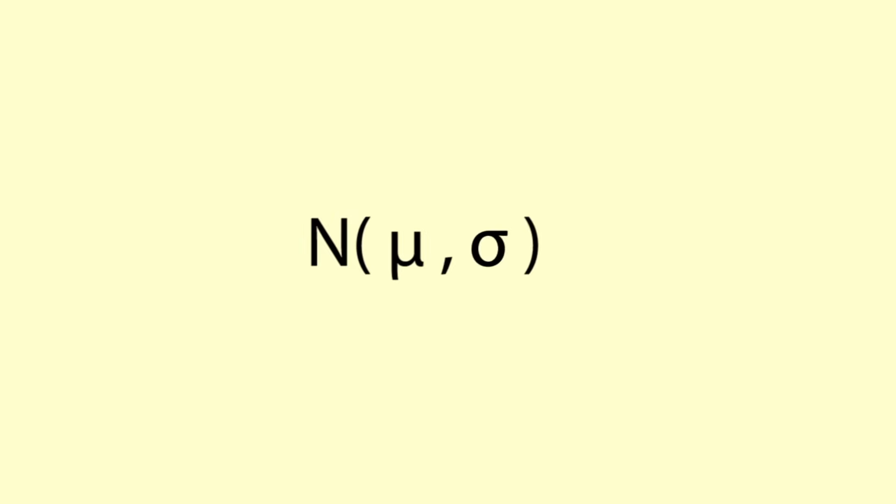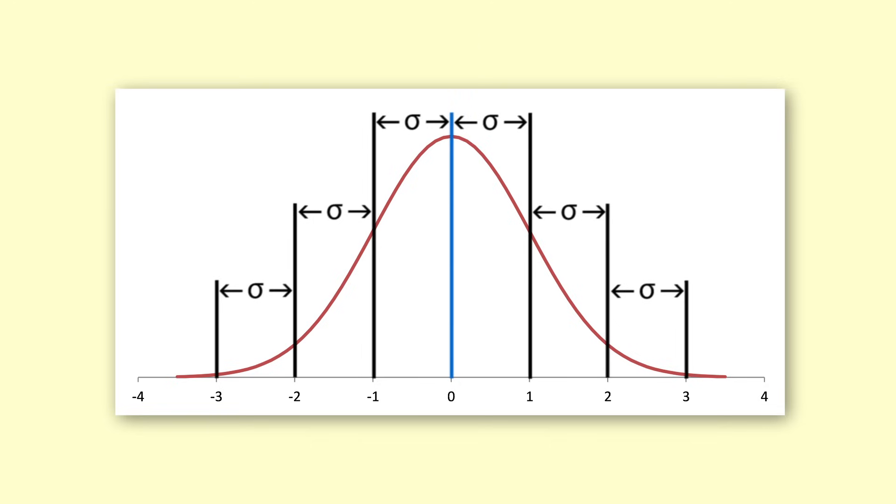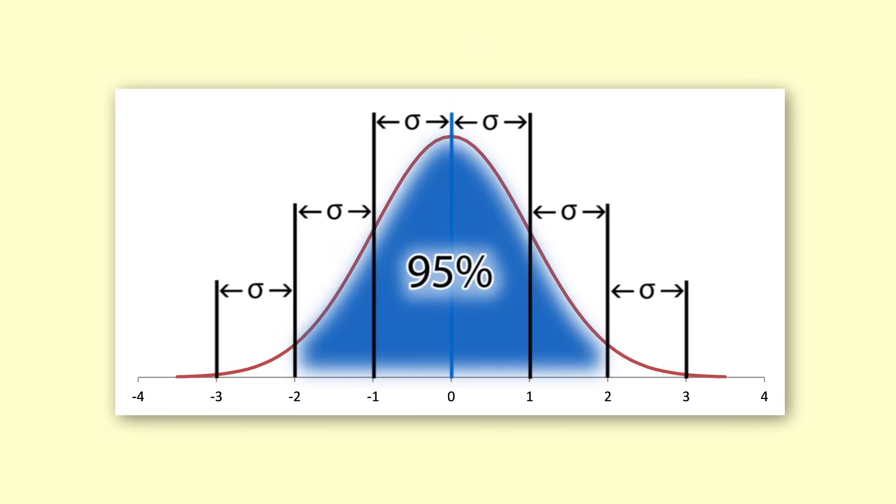The standard deviation tells us about how spread out the data is. A useful rule of thumb is that most or 95% of the data values will occur within two standard deviations of the mean.